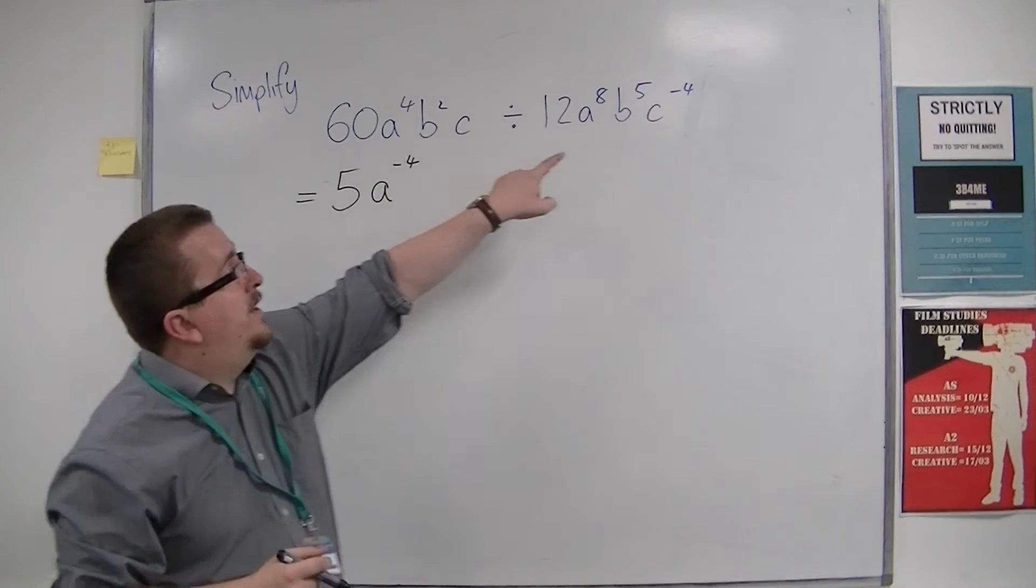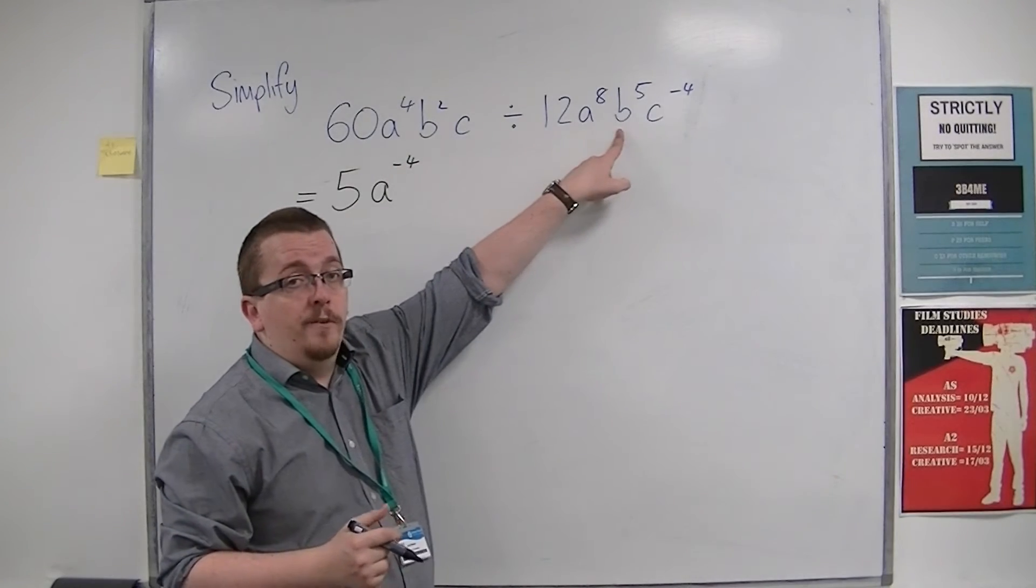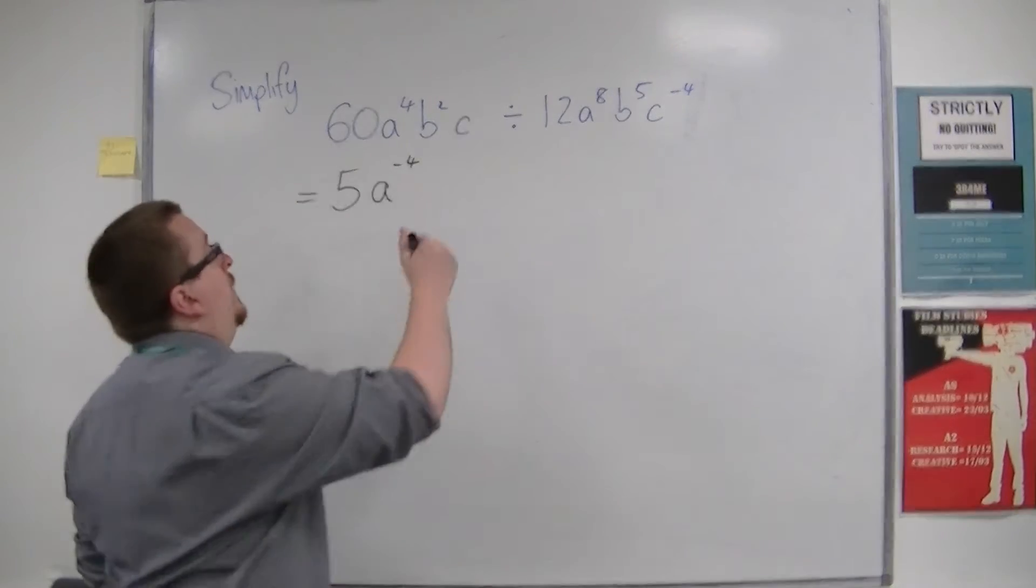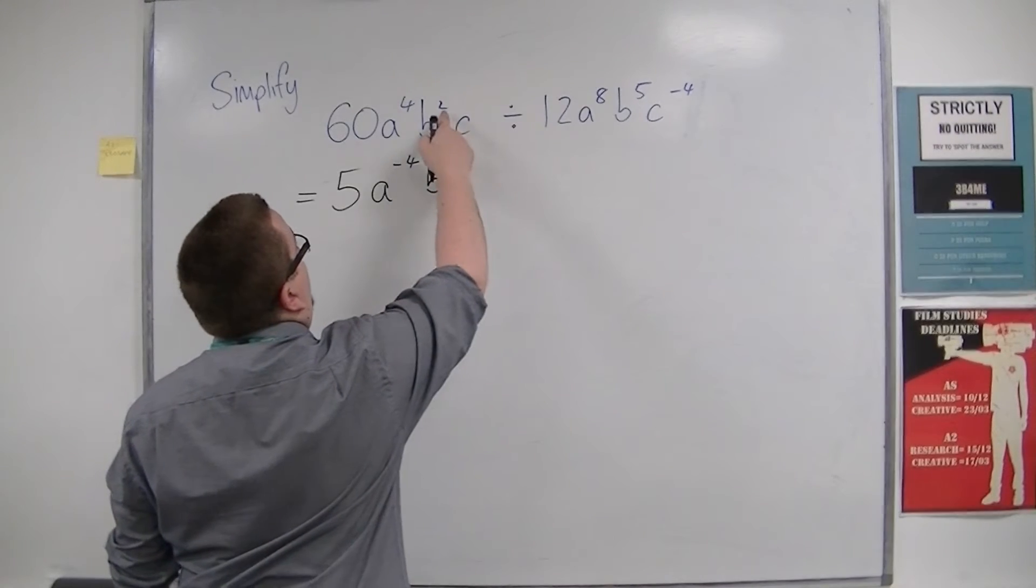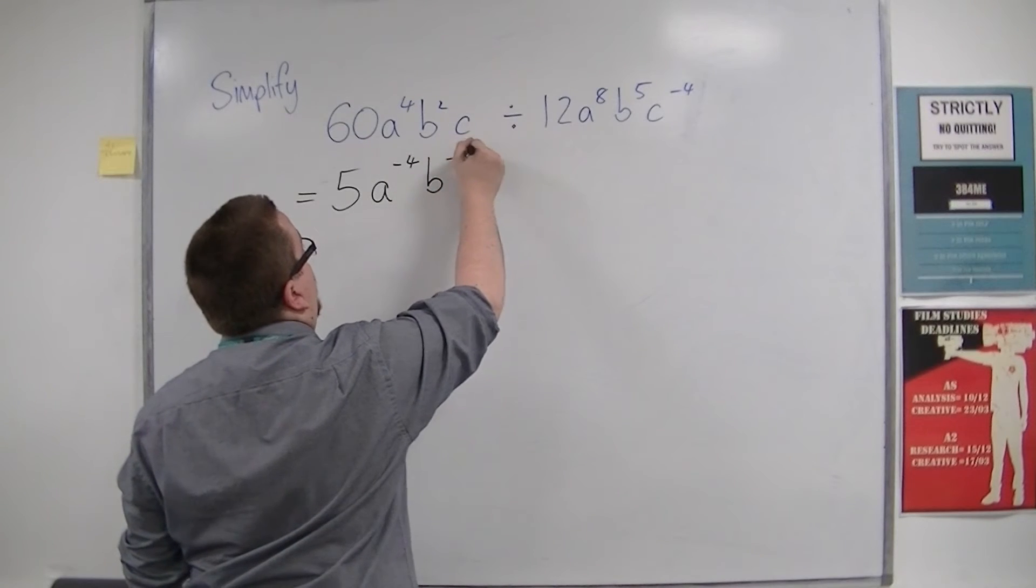Then you have b squared divided by b to the 5. Subtract the indices, so we now have b to the power of 2 take away 5, so minus 3.